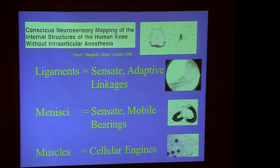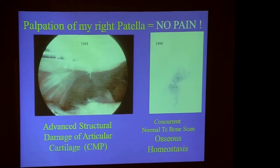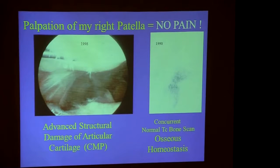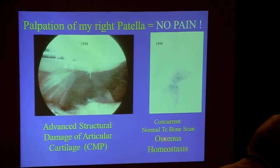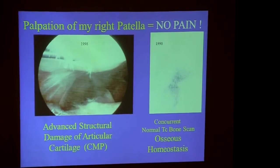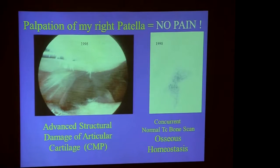I had both of my knees arthroscoped without anesthesia to produce a neurosensory map of the knee, to find out if you pushed on these structures whether you would feel it. The most important finding was that I had — and still have — grade 3 chondromalacia of both patellae. Here's a probe in my right patella in 1998. Without anesthesia, I felt no pain at all. I had a concurrent normal bone scan at that time proving osseous homeostasis — showing how critical bone metabolic activity is.